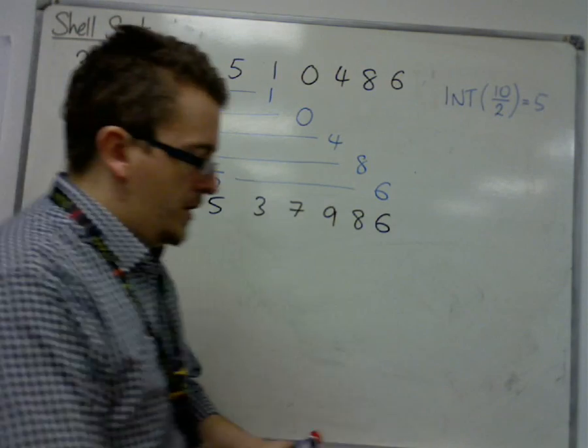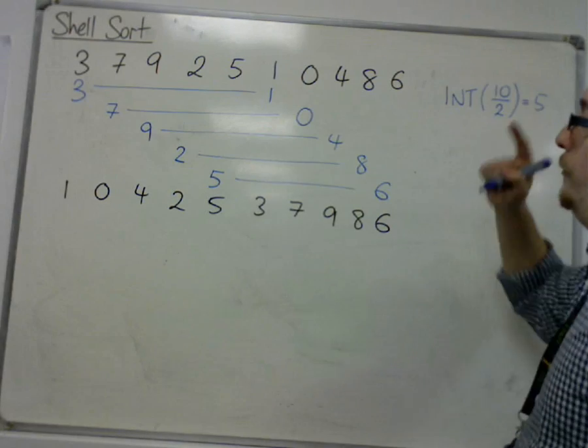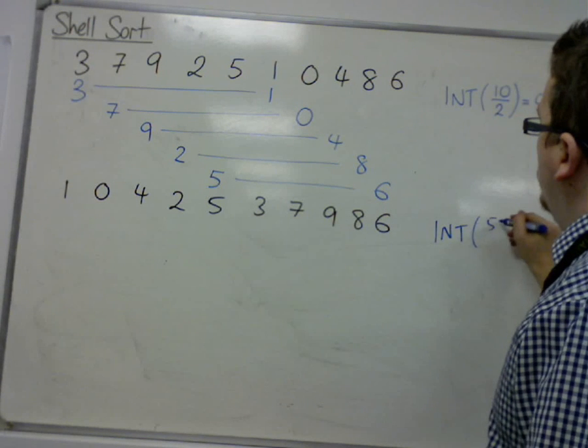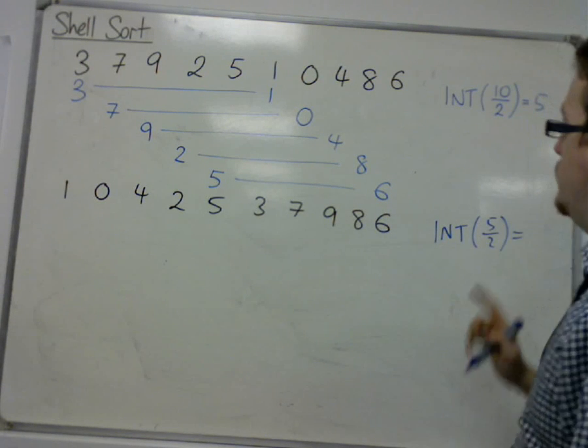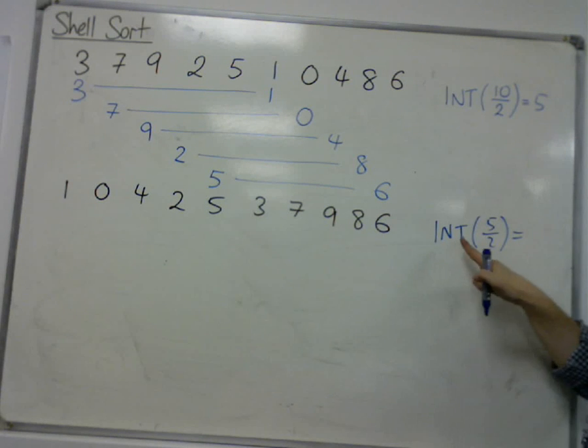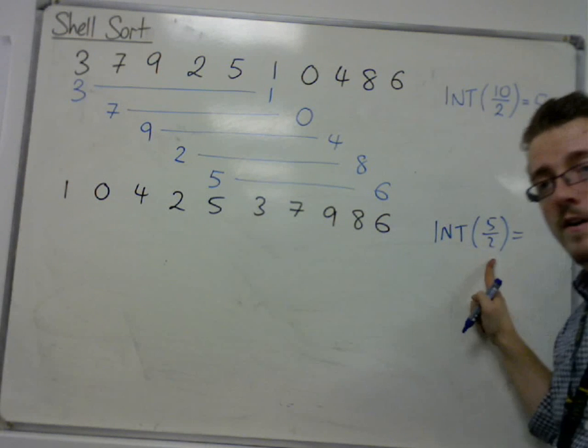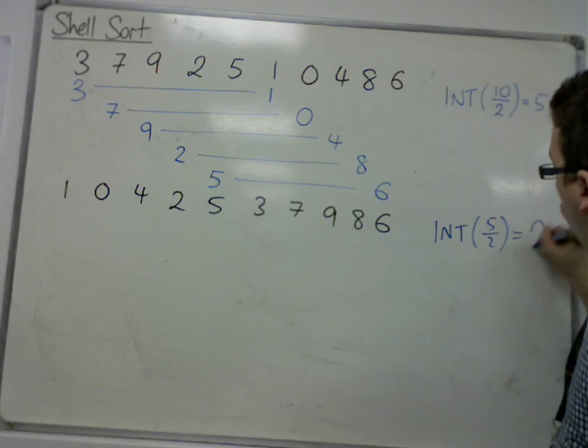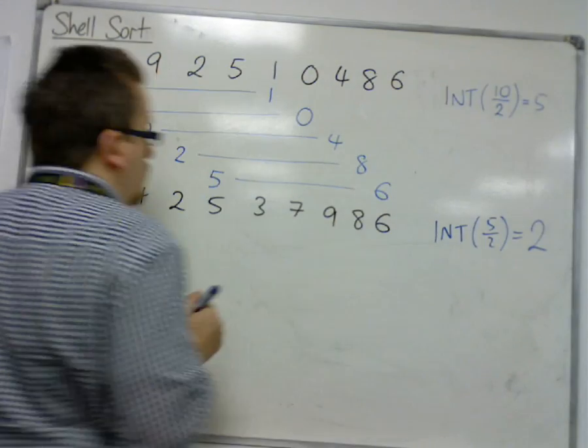So I then look at, having had 5 sublists, I divide that by 2. I'm looking at the integer part, remember. So this is the integer part of 2.5, and the integer part of 2.5 is the 2. So I'm splitting this into 2 groups.